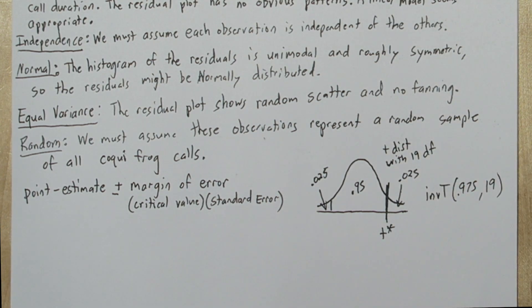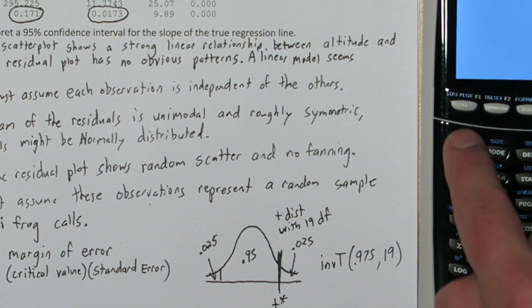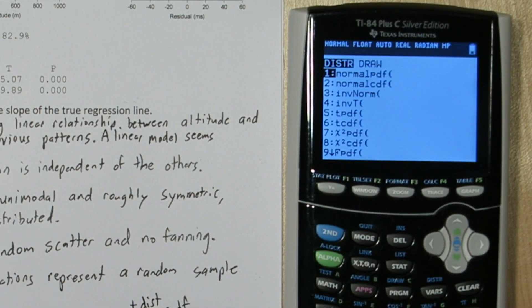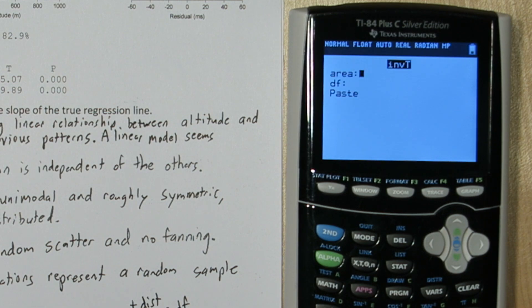To do this, we're going to tell our calculator to give us the T cutoff value that isolates the lower 0.975 of the distribution, which is the middle 95% and that tail area of 2.5%. We also have to tell it the degrees of freedom. To do this, press 2nd vars. This is our distribution menu, and we're going to go down to inverse T. We're going to type 0.975 for area, and for degrees of freedom, we'll put 19. Alright there's our T star, about 2.093.